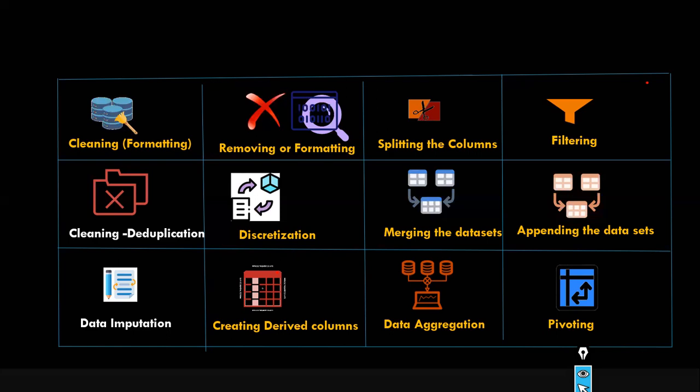For example, you have a salary column and a customer base of 10,000 customers purchasing from your website. You want to do customer profiling by creating a new column called customer type. Using bucketing or binning, you classify customers as high income, low income, and middle income customer groups.